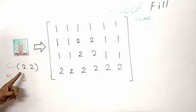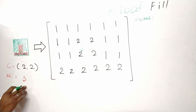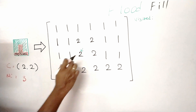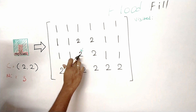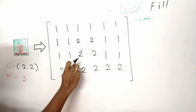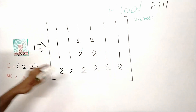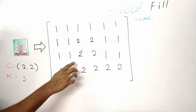Given this problem: a two-dimensional array with all the color values, and the position where the bucket tool was clicked — that is two comma two — and the new color we want to replace with, that is value three. To solve this, we do a DFS or BFS traversal to figure out the whole section, and meanwhile keep replacing the previous color with the new color. DFS or BFS lets us find all the connected components.